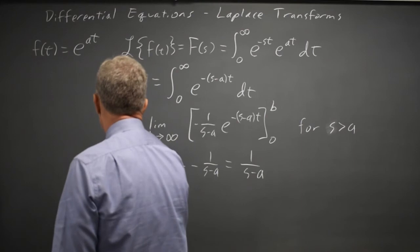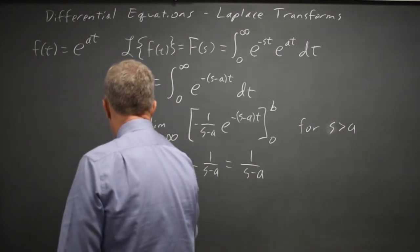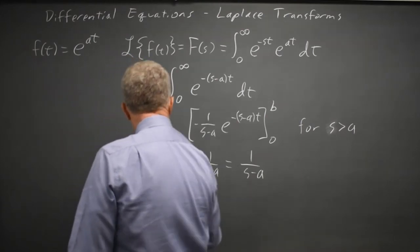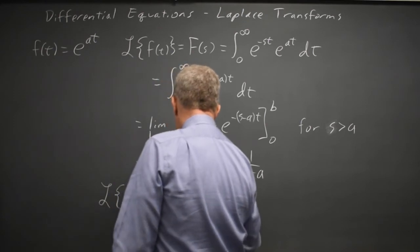The transform of e to the at equals 1 over s minus a.